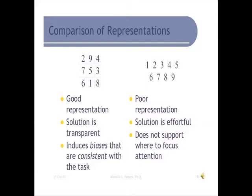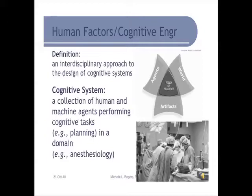Human factors, or cognitive engineering, is an interdisciplinary approach in the design of cognitive systems — a collection of human and machine agents performing a specific task in a specific domain. Human factors engineering as a whole involves the study of all aspects of the way humans relate to the world. Human factors engineers could look at lighting, machine design in terms of audible versus tactile alarms, the way drapes are designed, what chemicals are best used — they could work in all aspects of a domain.